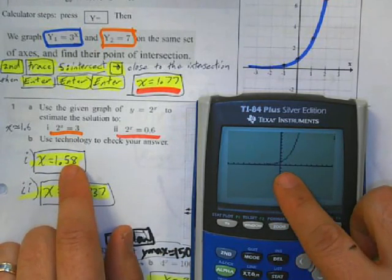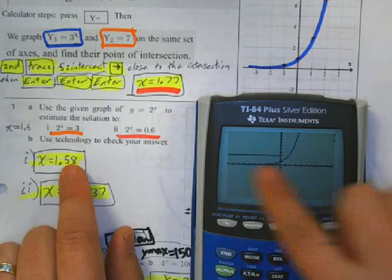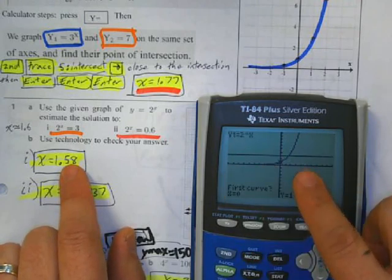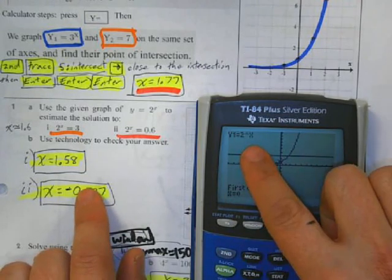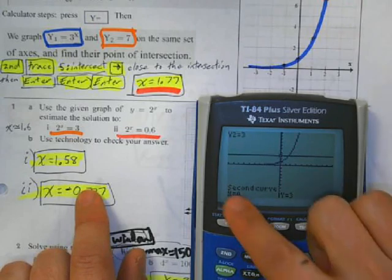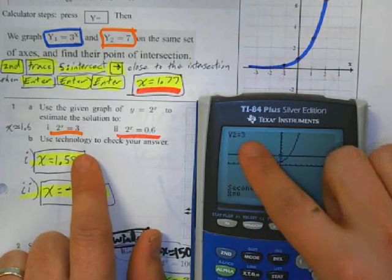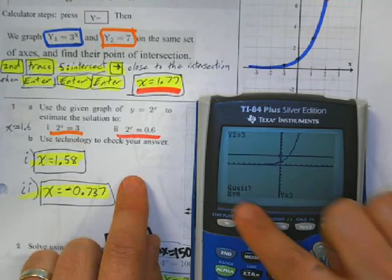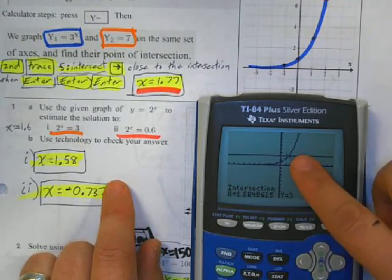5 for intersect. And here's the curve. Here's y equals 3. It says first curve. I've got the 2 to the x. I hit enter. Second curve. It says y equals 3. I hit enter. Guess. I hit enter. And it tells me my intersection is 1.58.